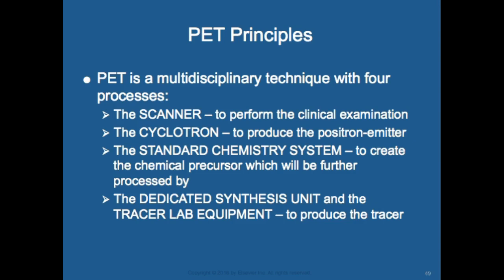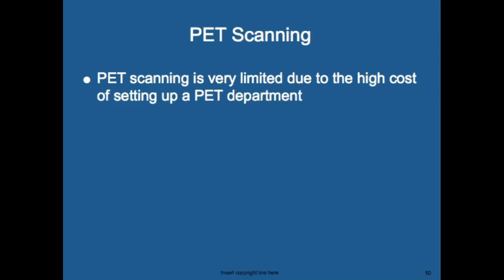The standard chemistry system creates the chemical precursor, which is further processed by a dedicated synthesis unit and tracer lab equipment to produce the tracer — all of this is required for PET imaging. PET scanning is very limited due to the high cost of setup, which is why you see mobile PET trucks visiting hospitals once or twice a week to scan all patients.